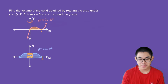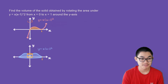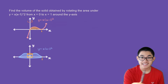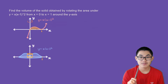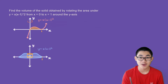So let's say we have a function y is equal to x times (x minus 1) to the power of 2 — that's this pink function right here. We're going to take the area between 0 and 1, so it's this area right here, and we're going to rotate it around the y-axis. Once we do that, we're going to have this three-dimensional object that we want to find the volume of.